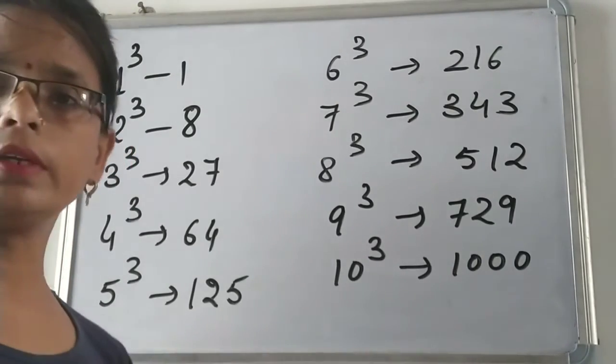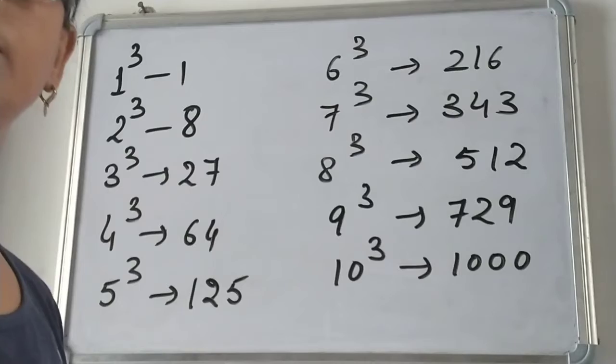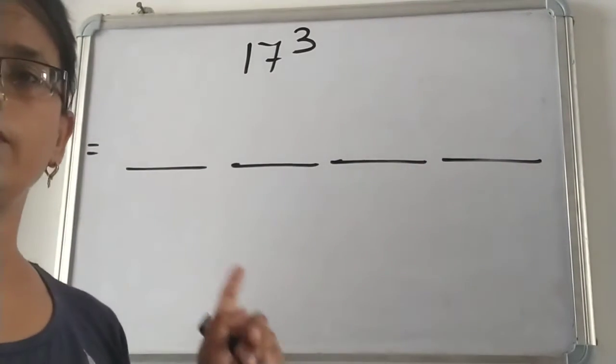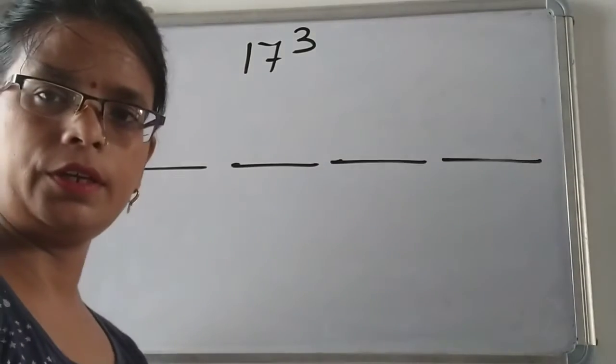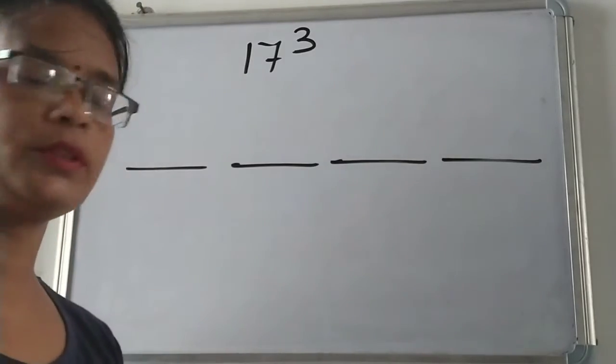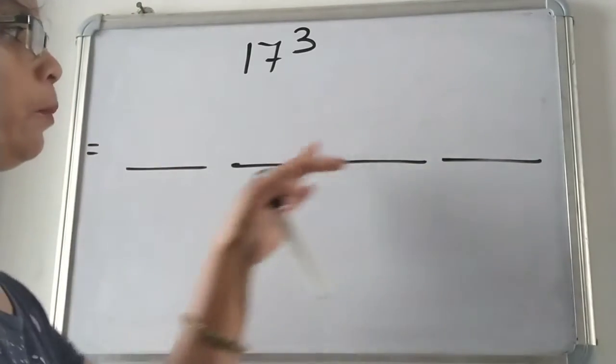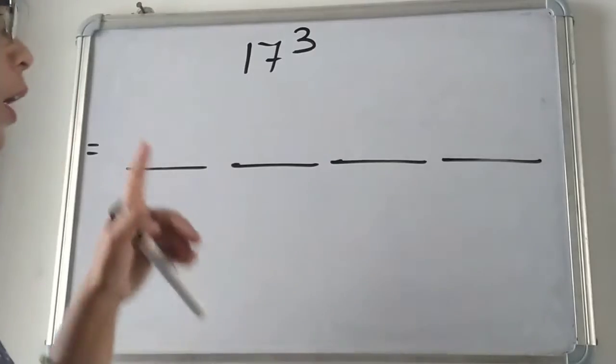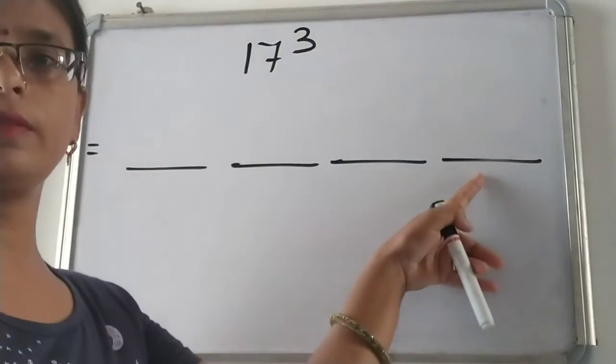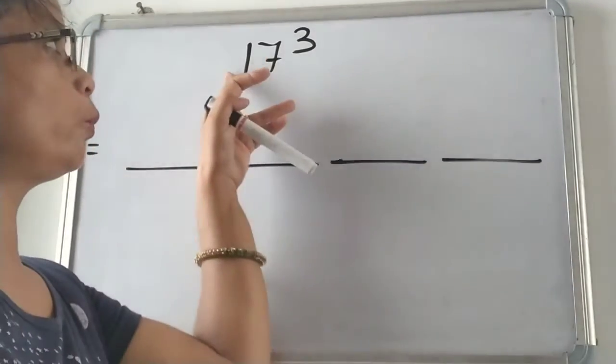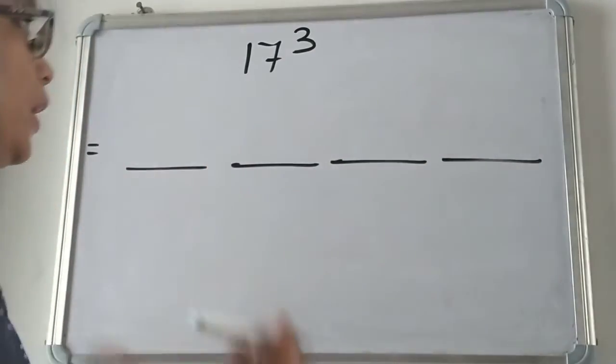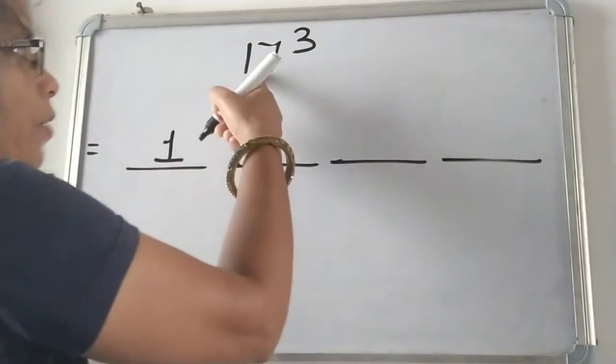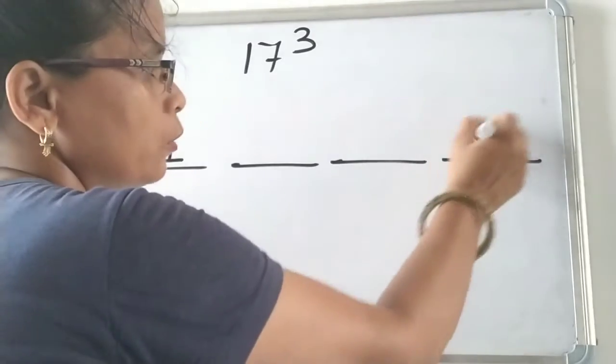Now we will take first example. In this example we will do the cube of 17. For this we will take these 4 parts. In first and last part we will do the cube of 1 and 7. 1 cube is 1 and 7 cube is 343.